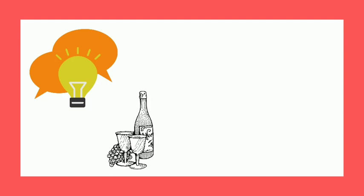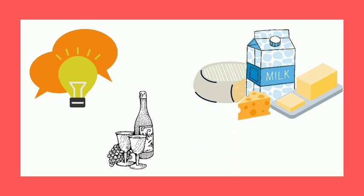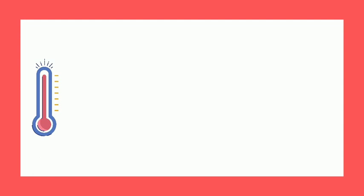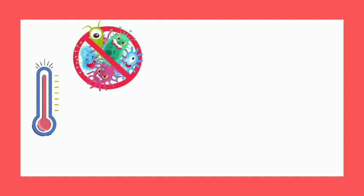He had developed pasteurization to prevent the spoilage of French wine originally, but later people started using it to preserve food like milk and dairy products, fruit juices, etc., by heating the stuff to a particular temperature which destroys nearly all the microorganisms present in it without affecting the composition or properties of the product much.